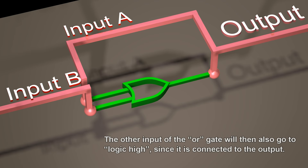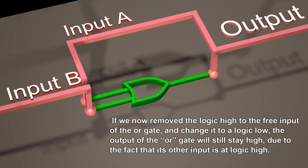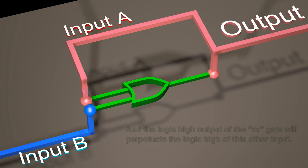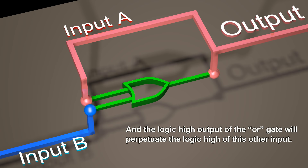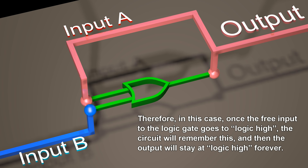The other input of the OR gate will then also go to logic high, since it is connected to the output. If we now remove the logic high to the free input of the OR gate and change it to a logic low, the output of the OR gate will stay high due to the fact that its other input is at logic high. And the logic high output of the OR gate will perpetuate the logic high of this other input. Therefore, once the free input to the logic gate goes to logic high, the circuit will remember this, and the output will stay at logic high forever.